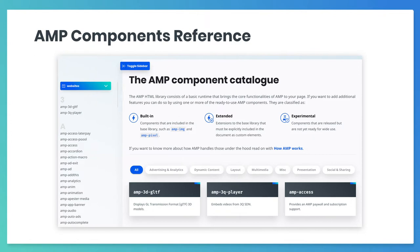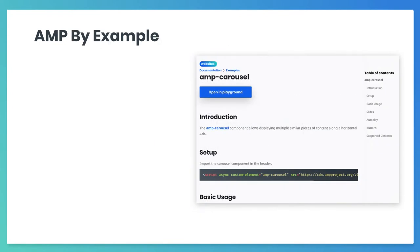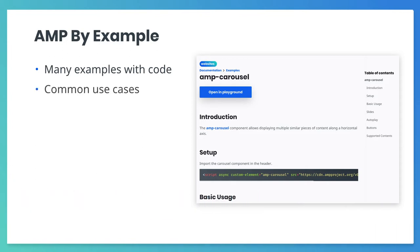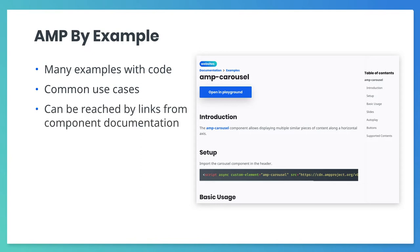In a future training we will talk about what to do when no single component meets our requirements. If you want to see an Amp component in action, check out the examples area on the Amp site in the link in the video description. This area shows how to use many Amp components and how to create common features with Amp. Normally you can also reach the sample for a component by clicking on a link in its documentation.